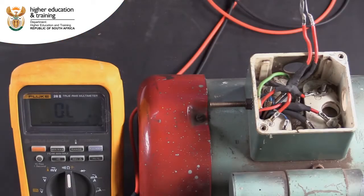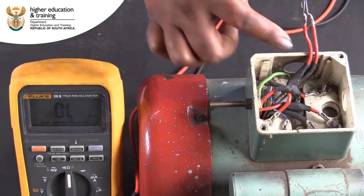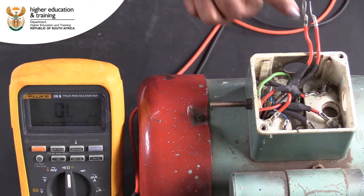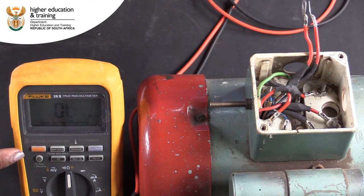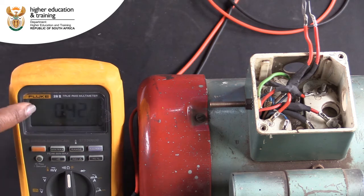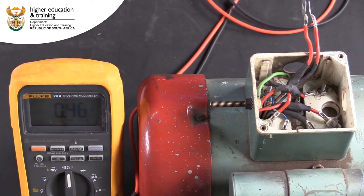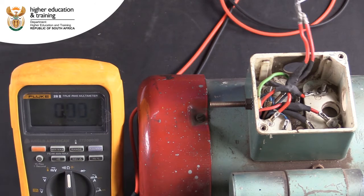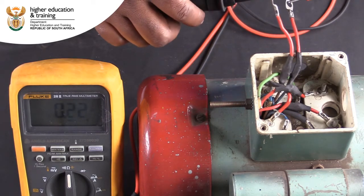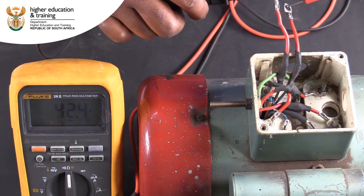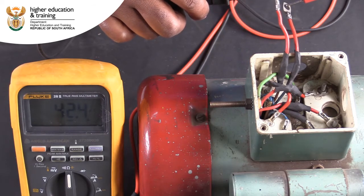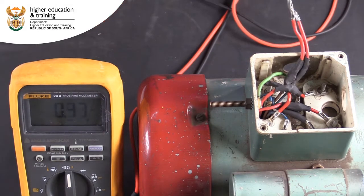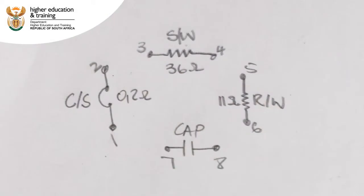The final two connections in our terminal box are presumably for the capacitor of this capacitor-start motor. To confirm this, we need to change our multimeter to the farad setting. When we connect the leads, we get a reading of 42.4 microfarads. Add the location of the capacitor to your diagram.